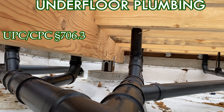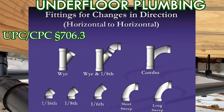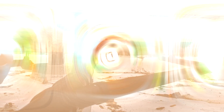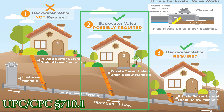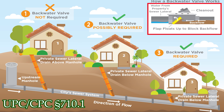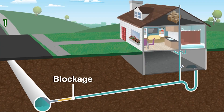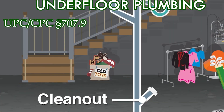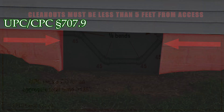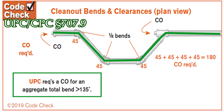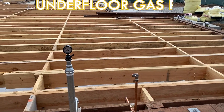Horizontal drainage lines connecting with other horizontal drainage lines must enter through 45-degree Y-branches or other approved fittings of equivalent sweep. If applicable, verify backwater valve requirements — this applies where fixtures are installed below the next upstream manhole cover, in which case a backwater valve is required. Plumbing cleanouts are required to extend to the outside of the building above the floor or within five feet of an underfloor access. Additional cleanouts are required for each aggregate horizontal change of direction exceeding 135 degrees.